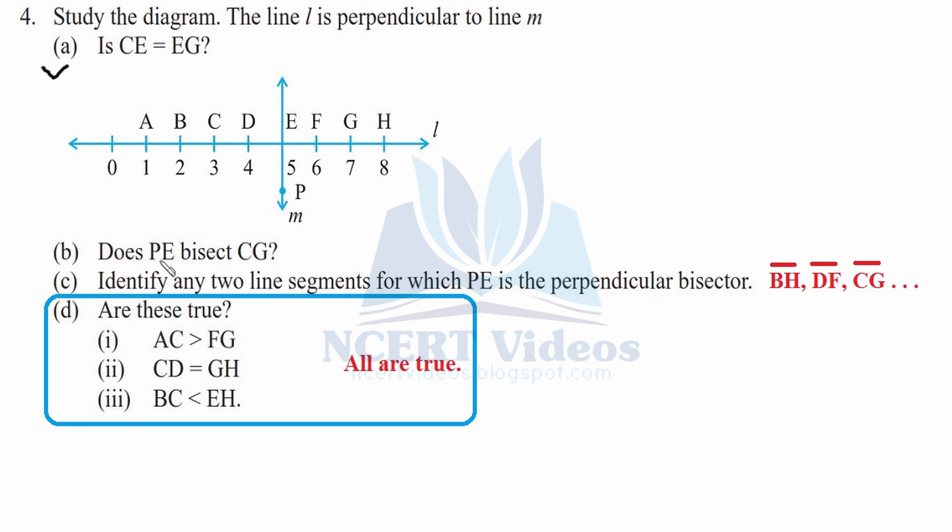Part (b): Does PE bisect CG? What is the distance of CG first of all? This is one, two, three, four units - four units total. This line segment divides in half - two on each side: CDE and another one is EFG. Therefore it is true.